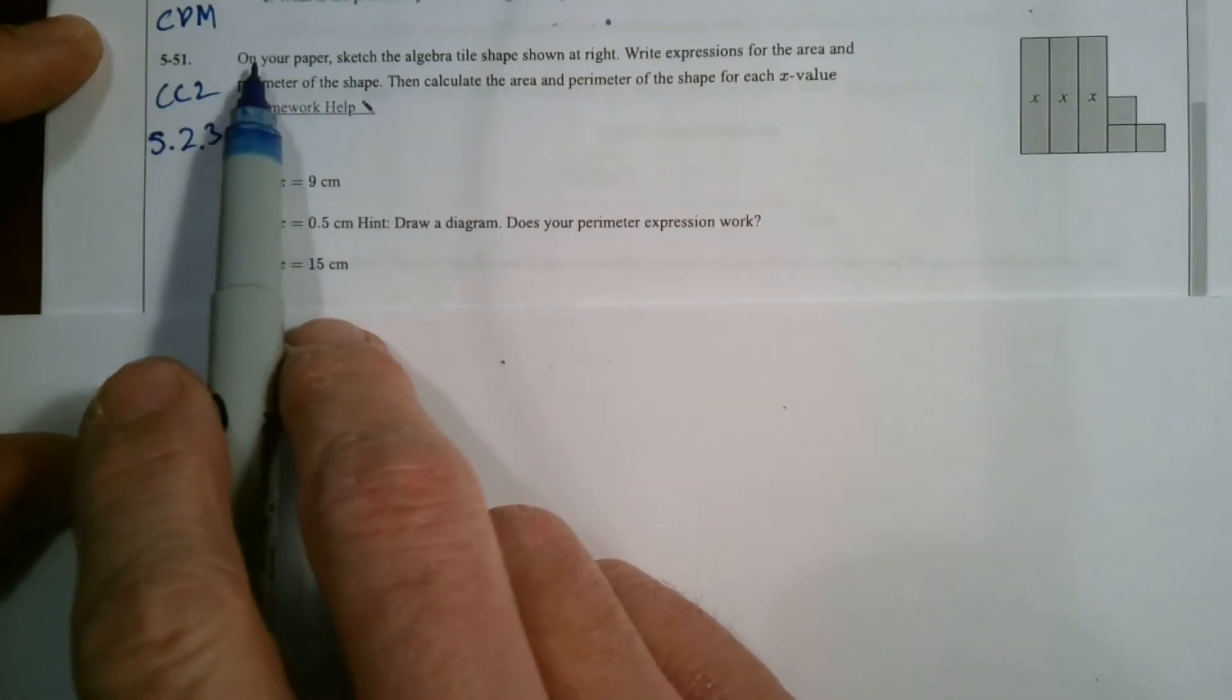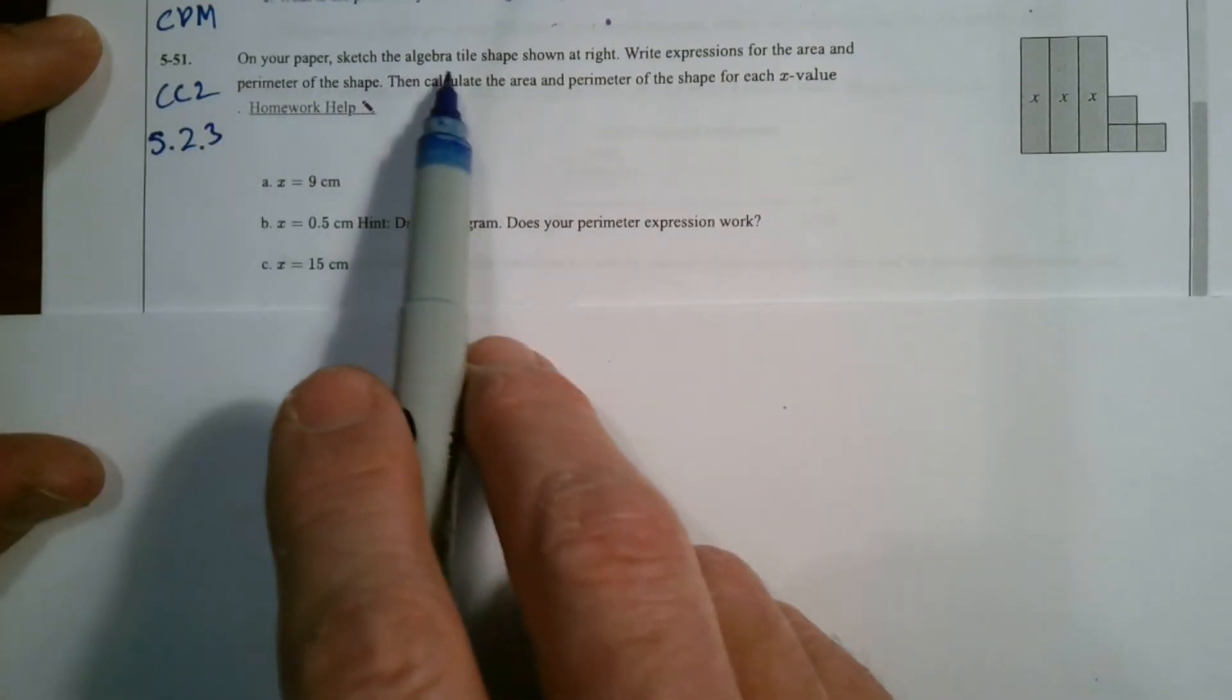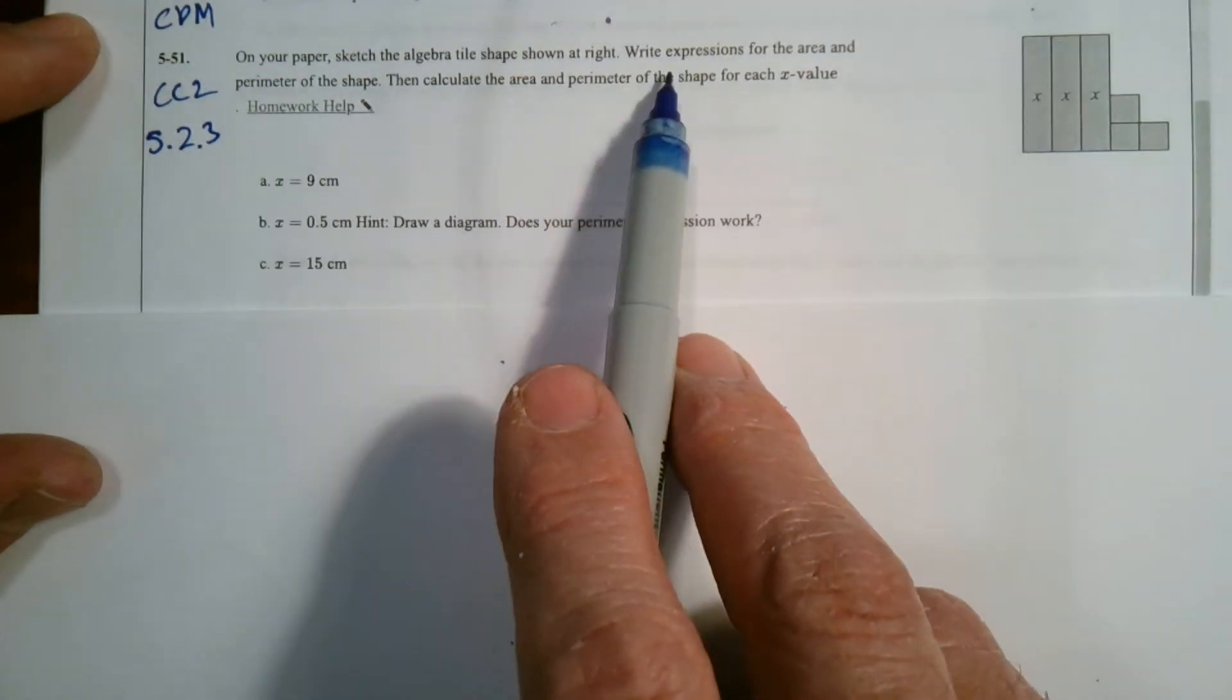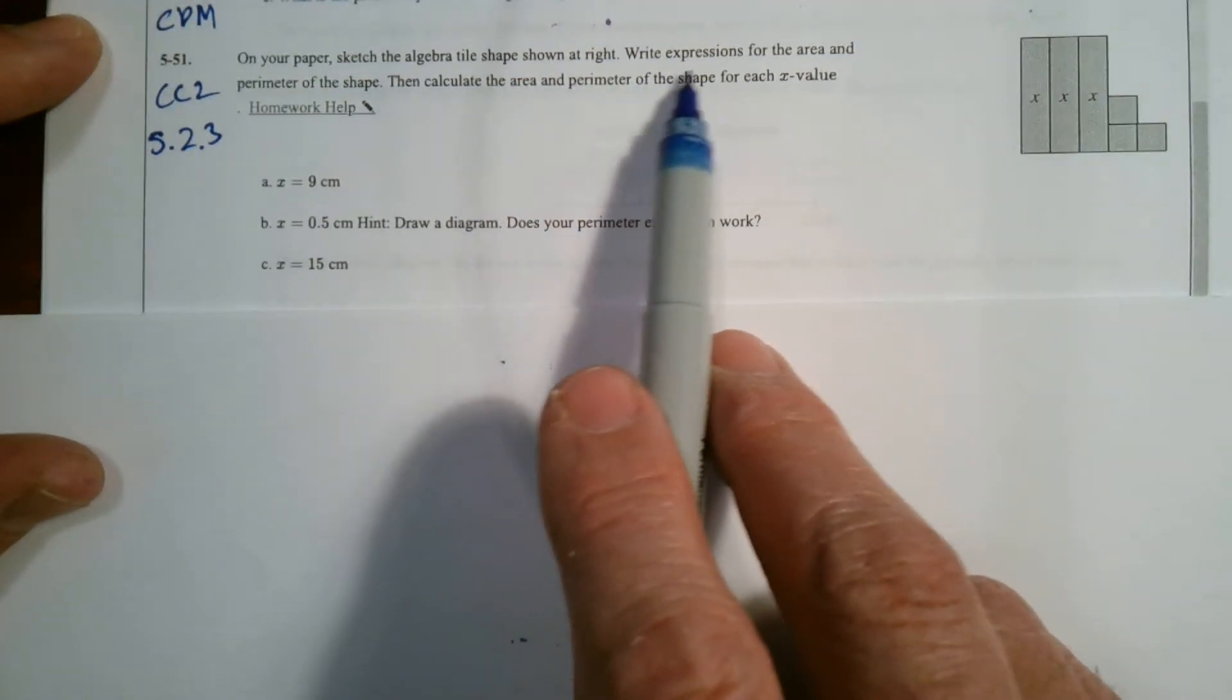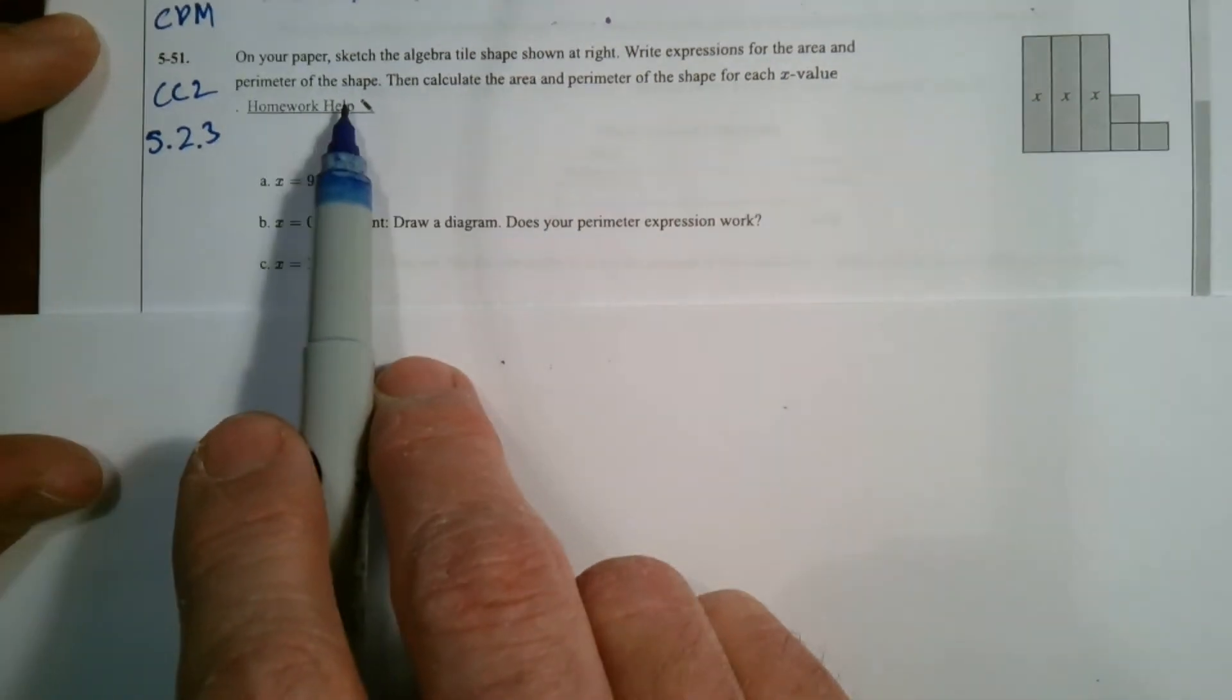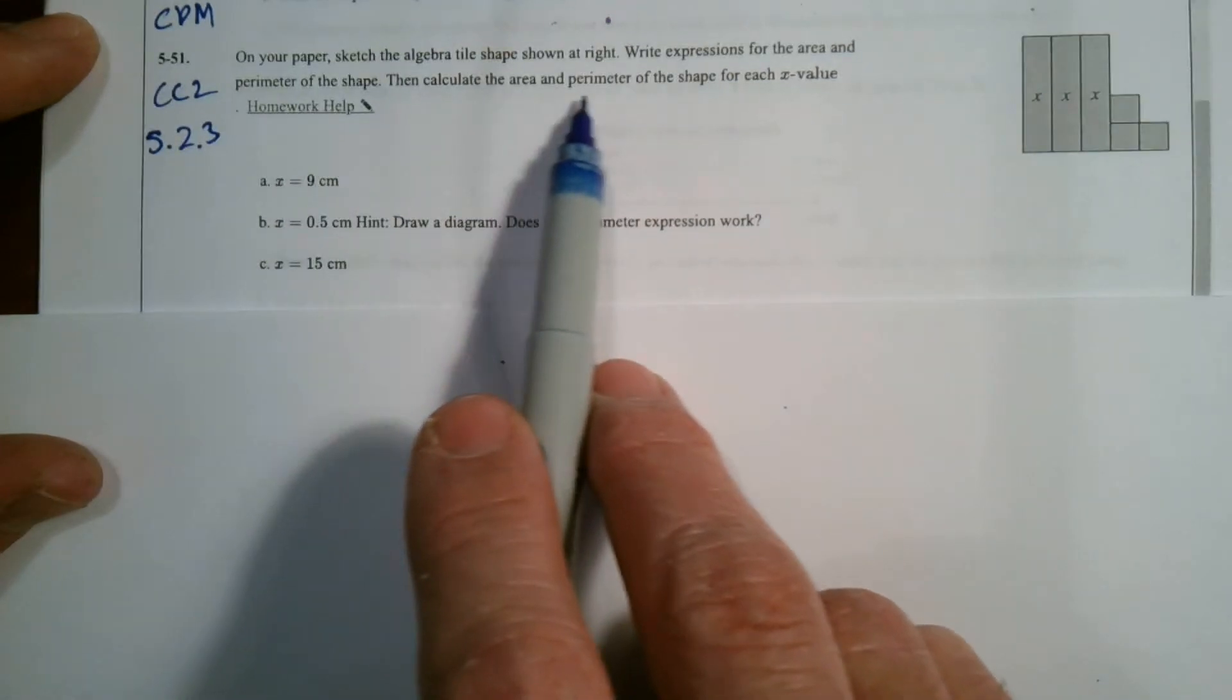So we'll read this question together. On your paper, sketch the algebra tile shape shown at right. Write an expression for area and perimeter of the shape, then calculate area and perimeter for each of the given X values.